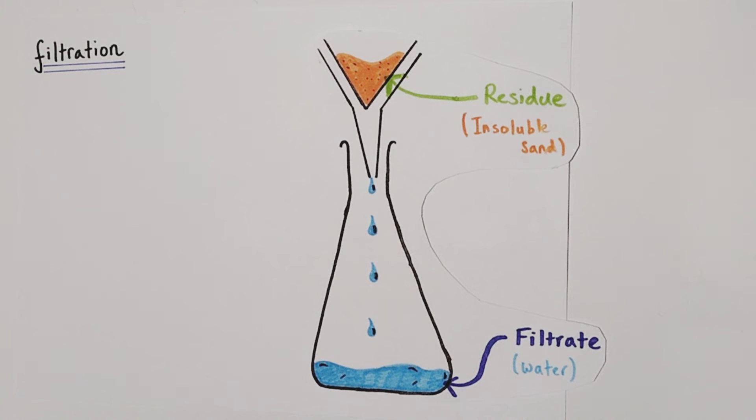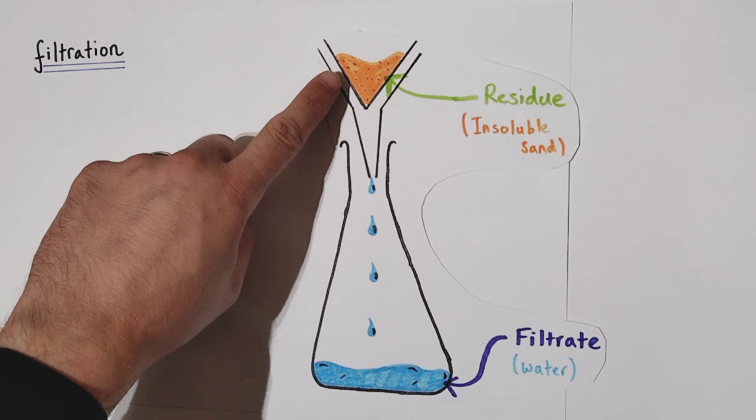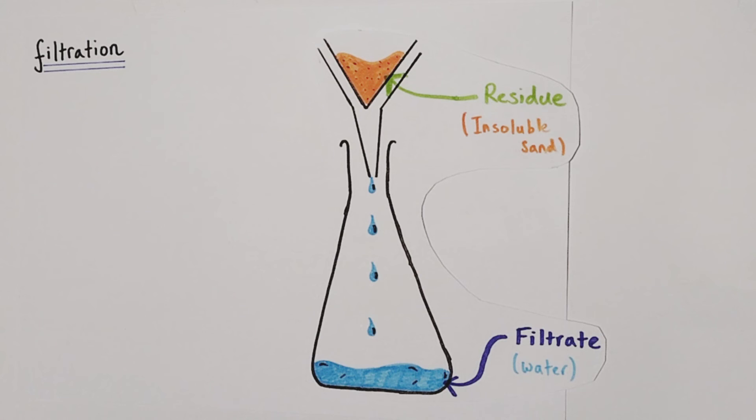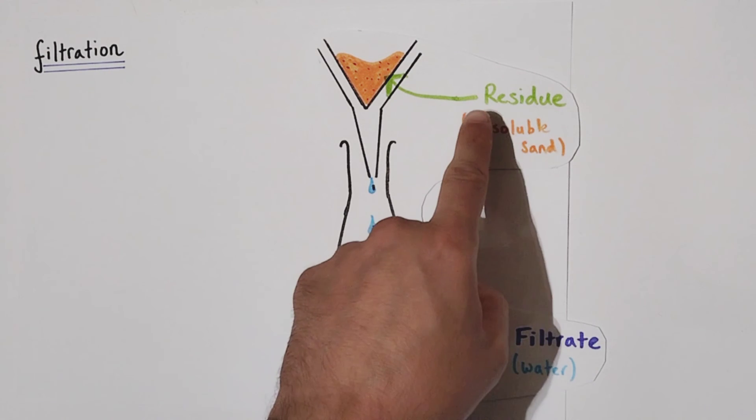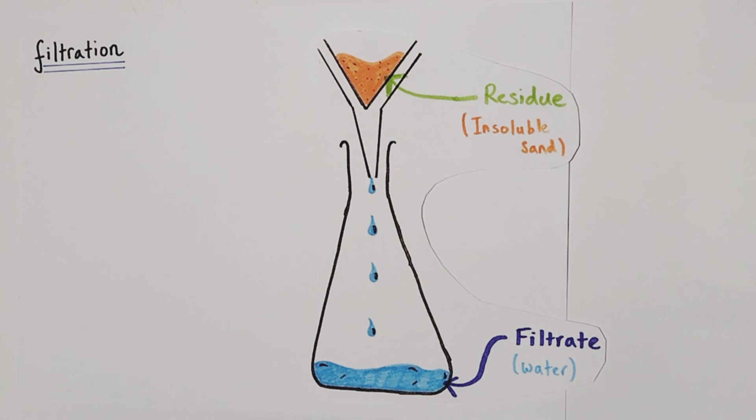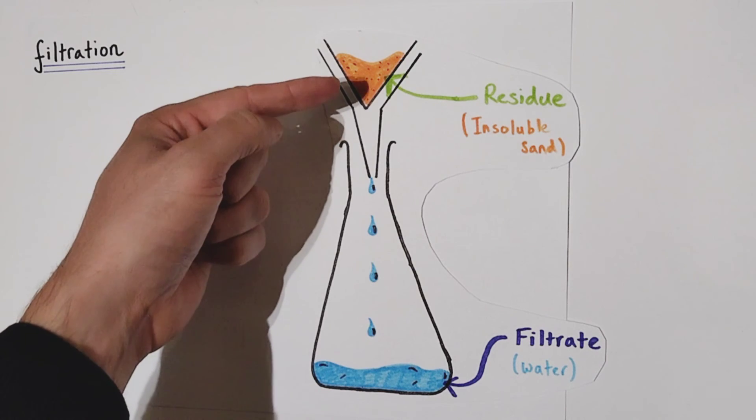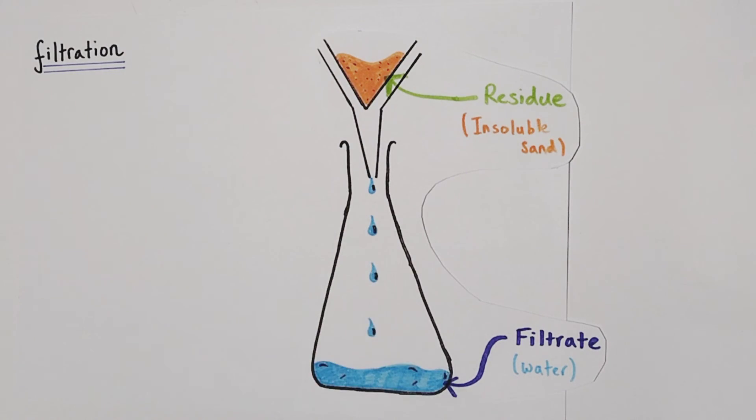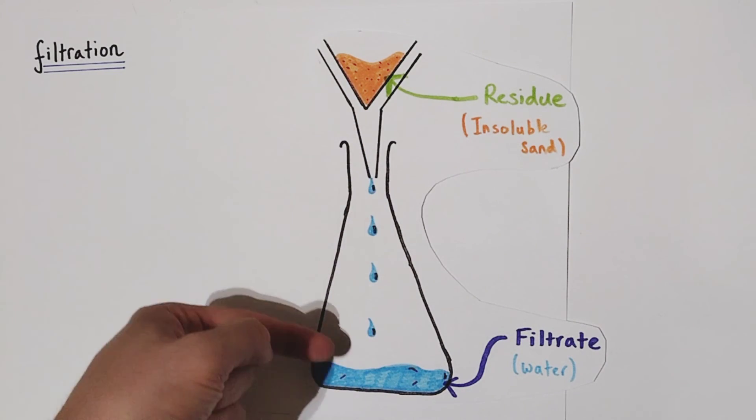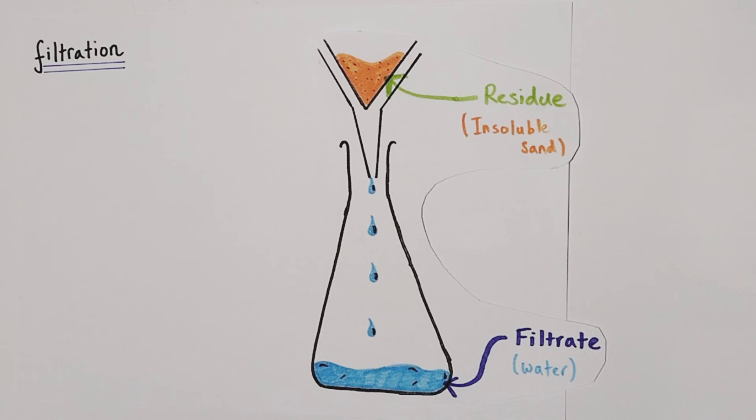What we have is a clear separation. The insoluble sand has been left behind on the filter paper and is now known by the generic term as the residue. Whilst the pure water has flowed through the filter paper down the filter funnel and into our collection vessel, in this case flask, and that water, that separate liquid, is generically known as the filtrate. Whatever passes through the filter paper we call it the filtrate.